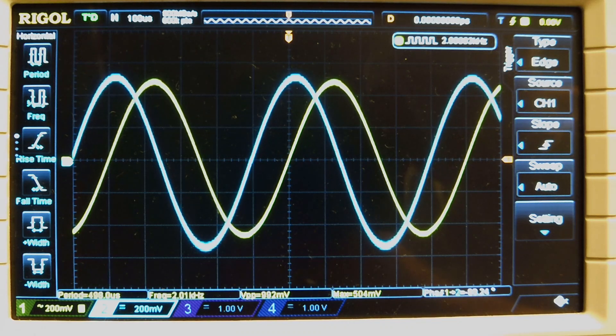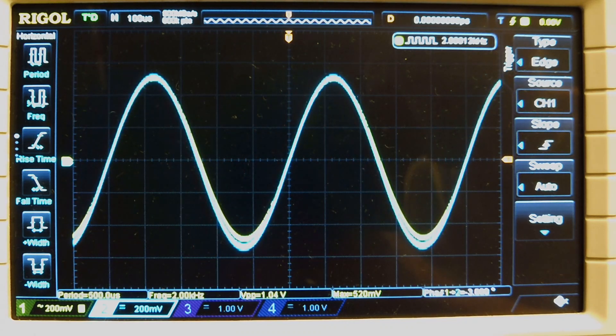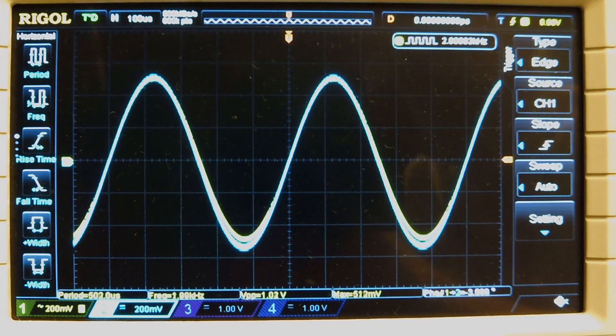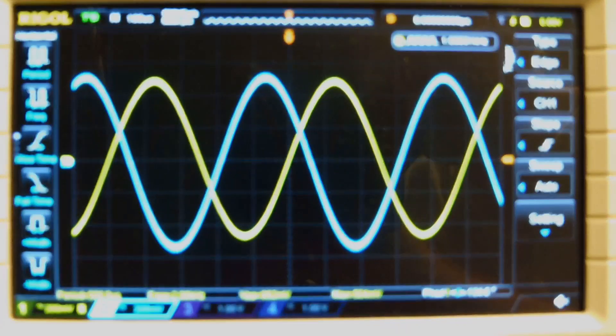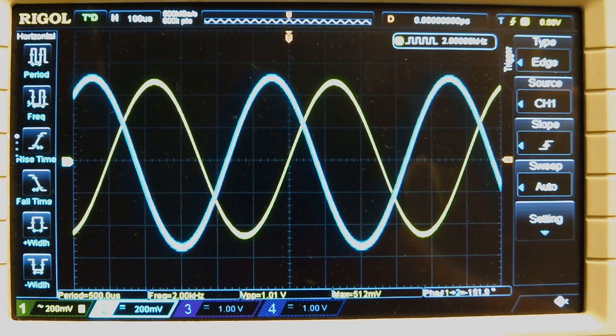Now if we used a digital potentiometer, an IC potentiometer, we could actually control the phase angle of these two signals with a microcontroller.